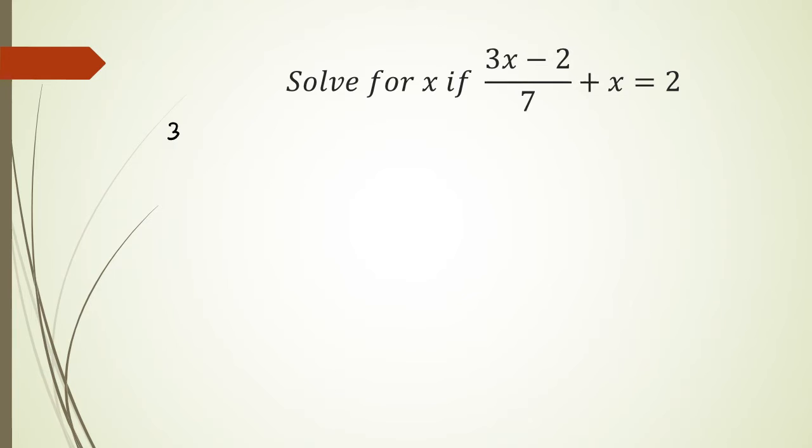The first method: I have (3x - 2)/7 + x = 2. The first thing I want to do is get rid of the x to the other side, which means I'm going to be ending up with 2 - x.